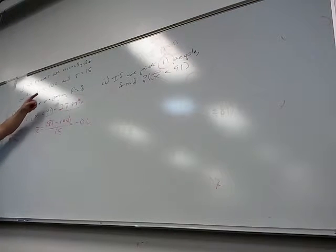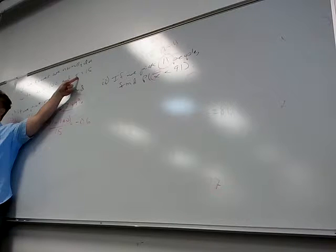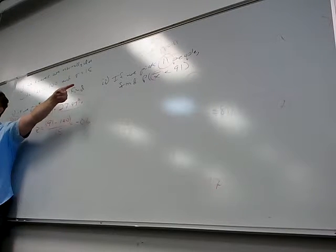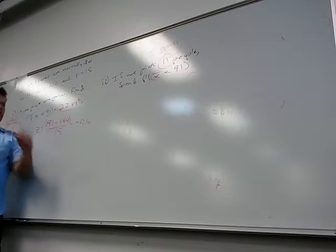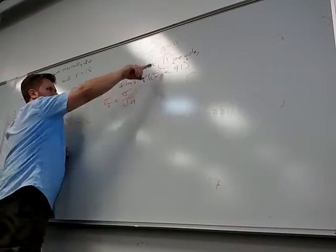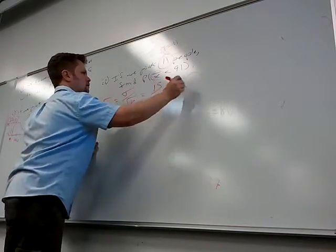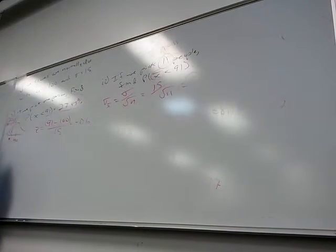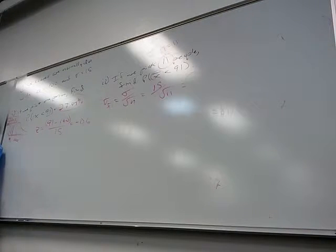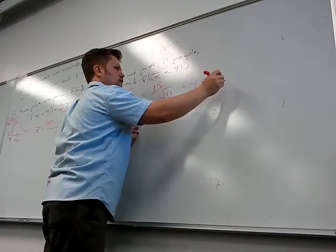I can't use this standard deviation because that's good for individuals. I've got to find the one that works for groups of 11 people. So I take the old one, divide by the square root of the sample size, 15 over square root of 11, like 4.818. What is it? 4.523.